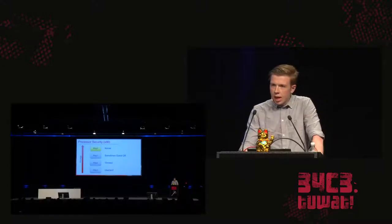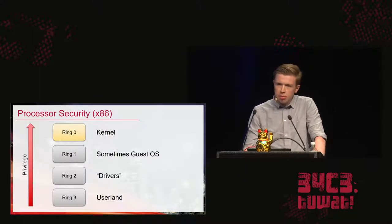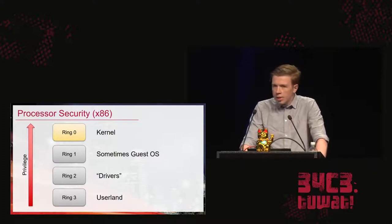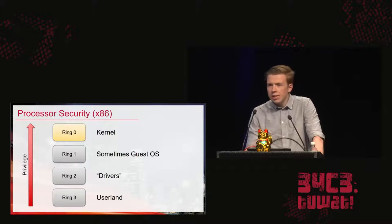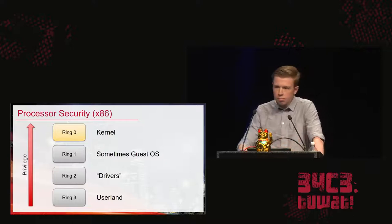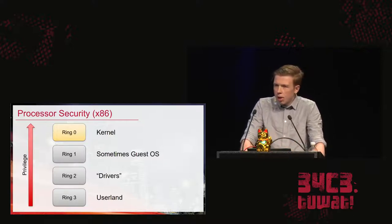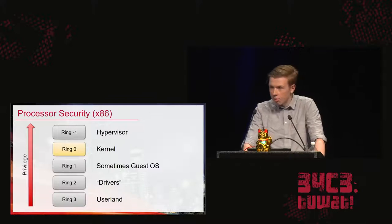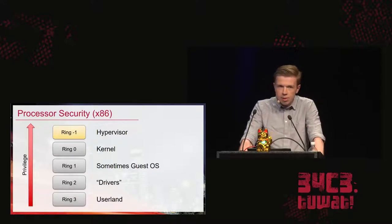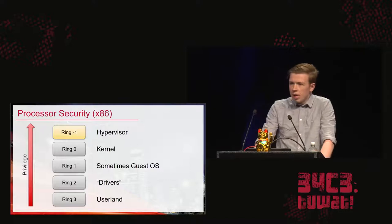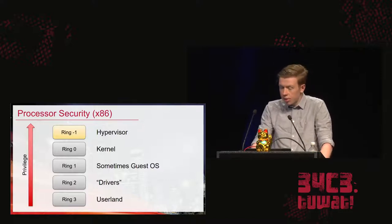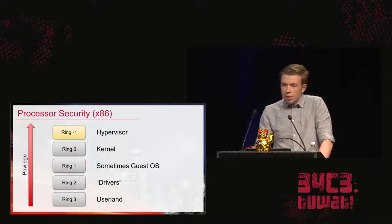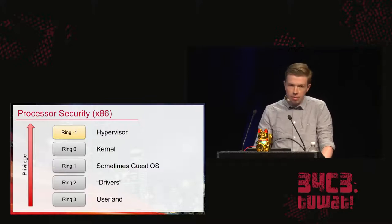There's also ring one and ring two supposedly used for drivers or guest operating systems, but really it just boils down to ring zero and ring three. Privilege increases as we go up the diagram, so ring zero is the most privileged ring and ring three is the least privileged. All of our secrets and attacker goals are in ring zero, and the attacker tries to access those from the unprivileged world of ring three. If you want to add a processor feature that ring zero can't access, you add ring minus one, which is often used for a hypervisor.